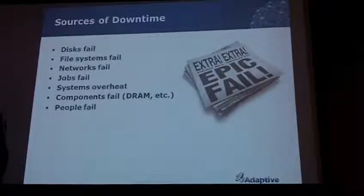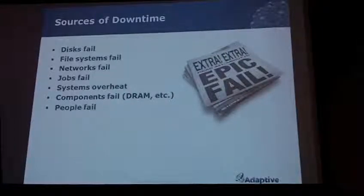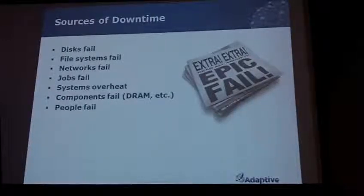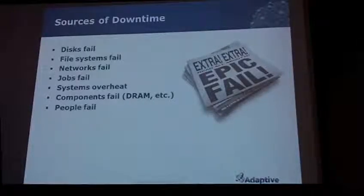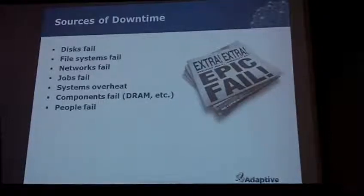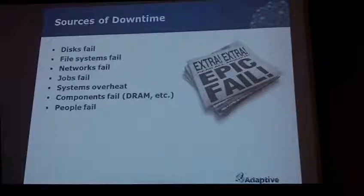File systems fail — they fill up, and network connections to those file systems go down. Networks go down too. In HPC we often have multiple networks: InfiniBand, Ethernet, 10 Gig, with different adapters. You may have access via InfiniBand but not Ethernet or vice versa. They can go up and down at different times, and sometimes you can exploit that — if you can reach a node via one network versus the other, you can use that connection to restart something.